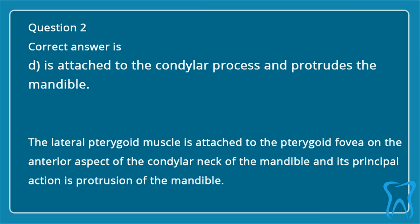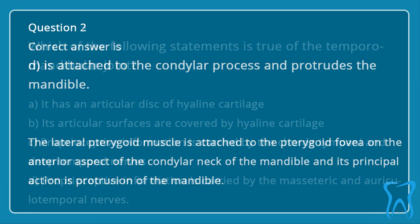The lateral pterygoid muscle is attached to the pterygoid fovea on the anterior aspect of the condylar neck of the mandible, and its principal action is protrusion of the mandible.